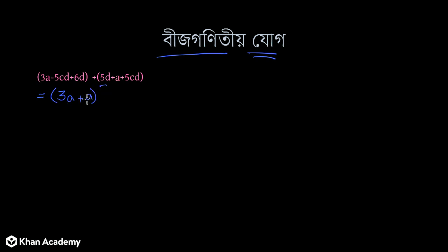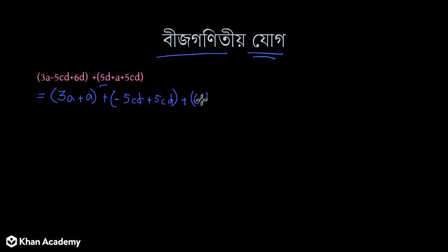The terms with 'a' — those that have only the numerical part with 'a'. The two terms are the same type, meaning both have 'a'. Then we place the minus inside, plus five cd, plus five cd, and the remaining part — sixty plus fifty.